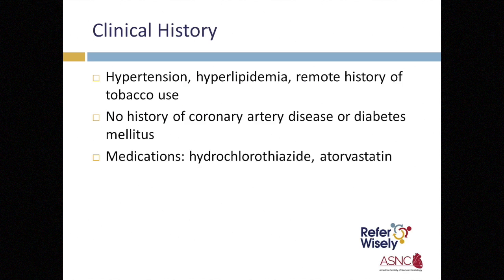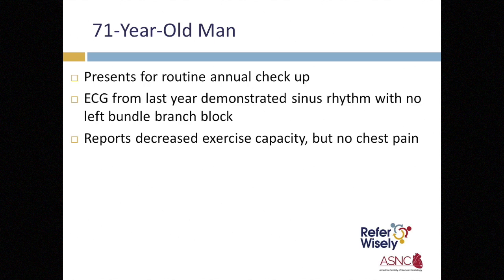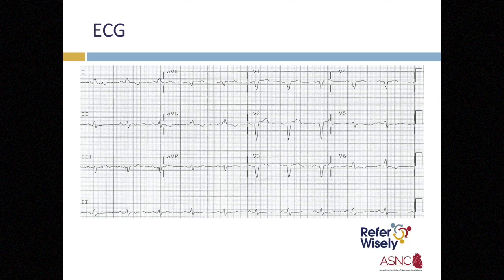In the outpatient setting, this patient might be familiar to you. He has hypertension and hyperlipidemia, no known coronary artery disease, and comes in for a routine yearly checkup. He reports no chest pressure but does have decreased exercise intolerance, and because of this, you get an EKG. This could also be a patient who visited an urgent care clinic, got an EKG, and was told to discuss it with their primary care doctor. Either way, you now have a patient with no known coronary artery disease and an EKG showing a new left bundle branch block — not symptomatic with chest pain. So what do you do?